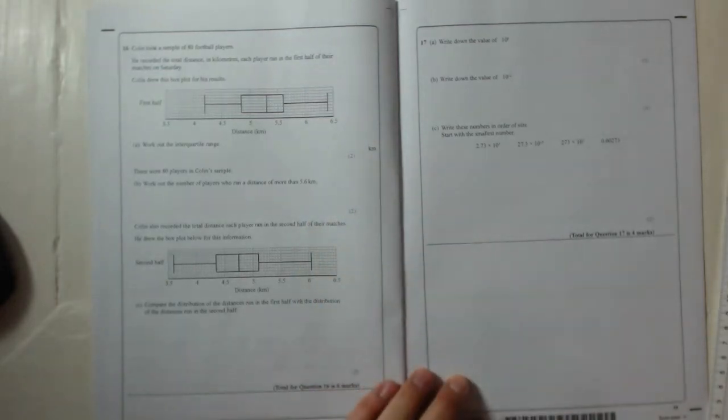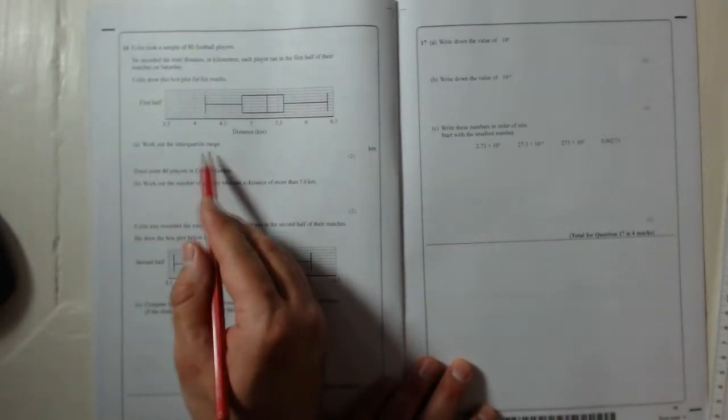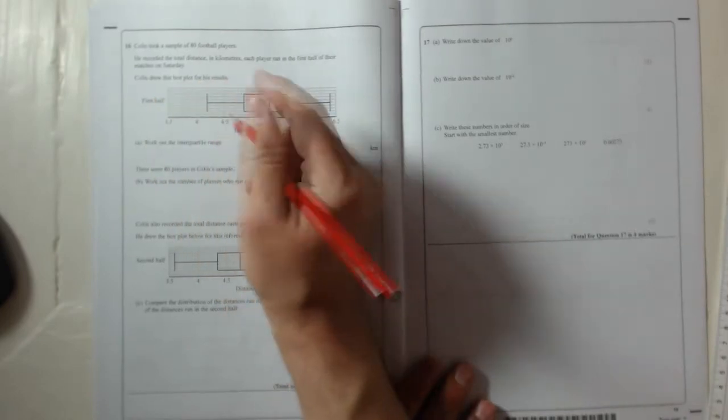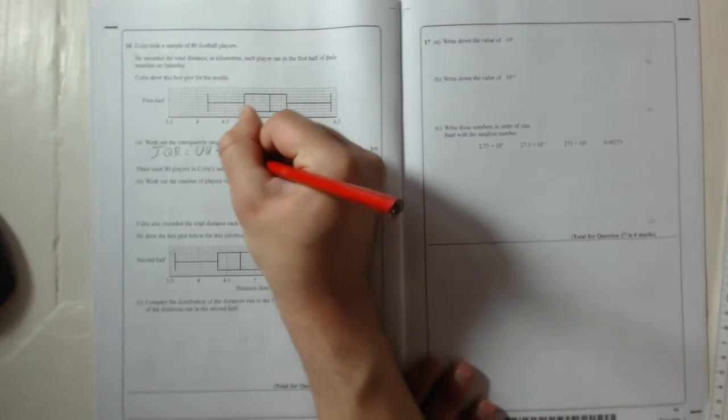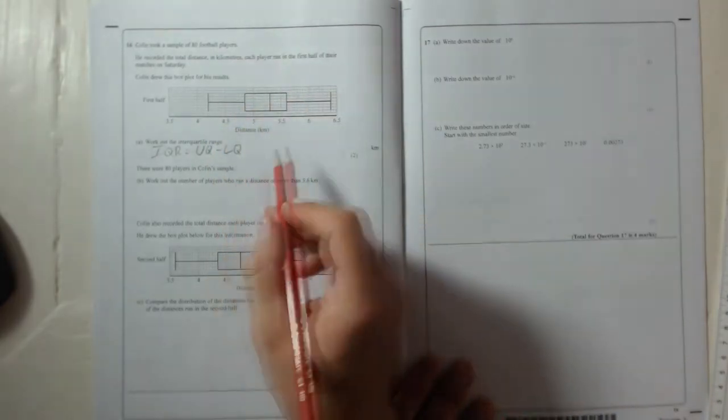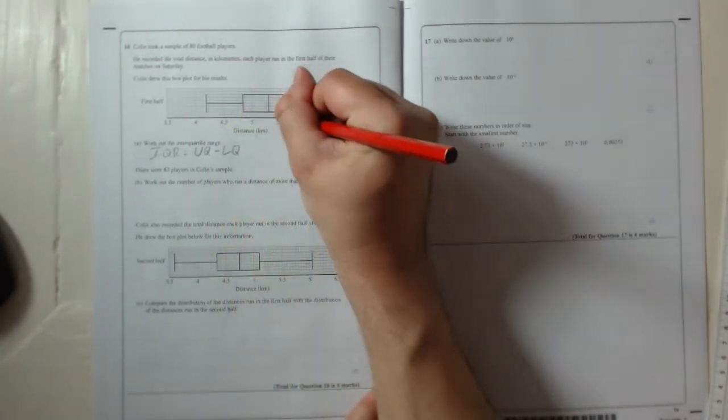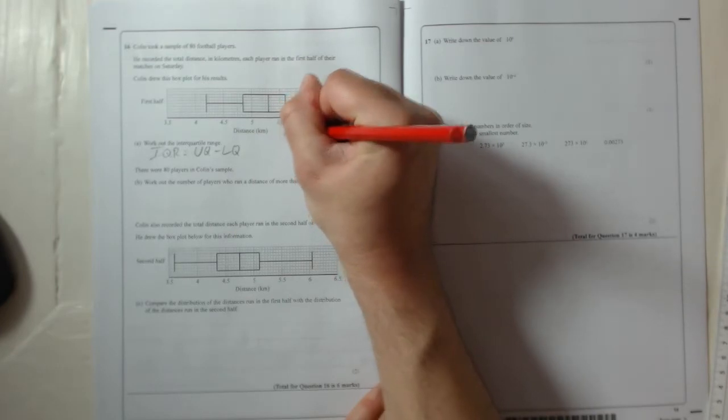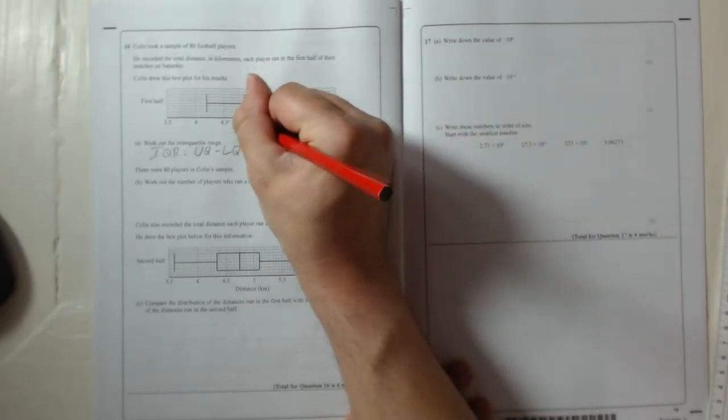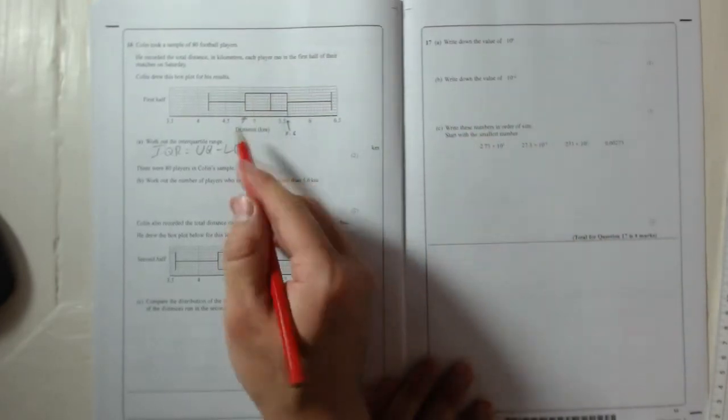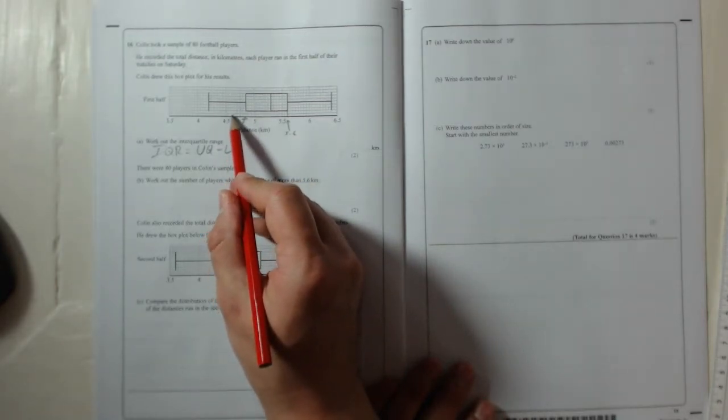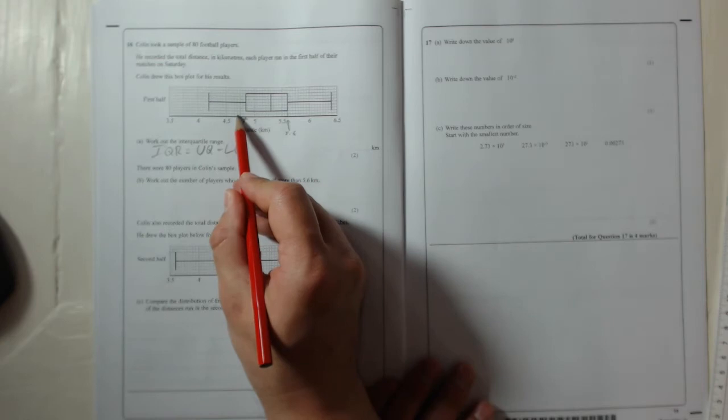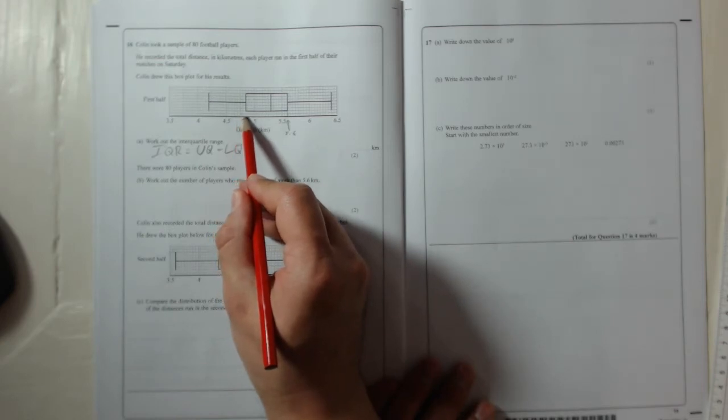So, work out the interquartile range. That would be the upper quartile, so IQR, interquartile range, is the upper quartile take away the lower quartile. So the upper quartile is 5.6 and we're going to take away the lower quartile which is 4.6, 4.7, 4.8, so it's 4.85.